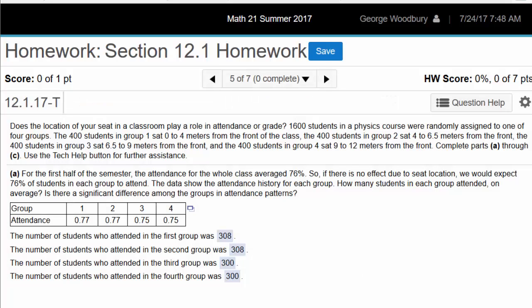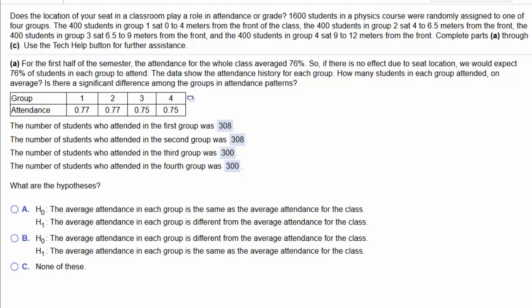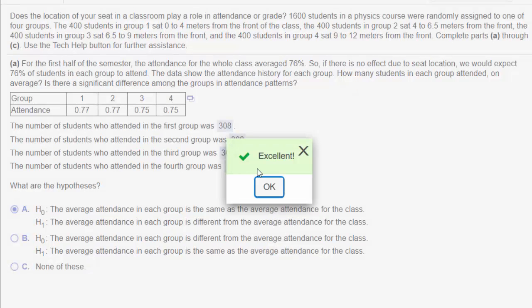Alright, let's continue to the next part of the problem. What are the hypotheses? The null hypothesis is that the average attendance is going to be the same for each of the four groups. Remember, the null hypothesis is always a statement about equality or no change. So I'm going to go with option A here. The attendance is the same for each group and the alternative is that the average attendance is different than the class. Excellent.